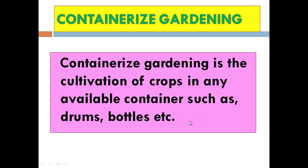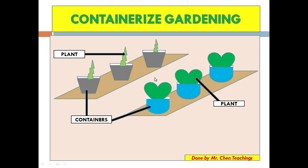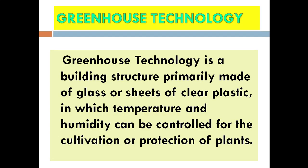Containerized gardening is very important for persons living in cities who want to bring farming closer to their home. Containerized gardening is the cultivation of crops in any available container — such as drink bottles, buckets, drums, and PVC pipes. Containers should be perforated with holes in the bottom for drainage so excess water can drain and air can enter the soil for respiration. Different types of containers can be used for farming.